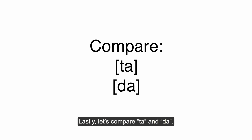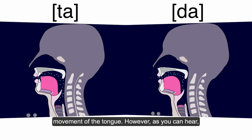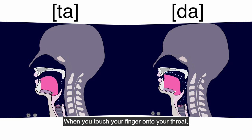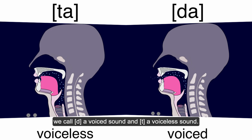Lastly, let's compare ta and da. Ta and da have exactly the same position and movement of the tongue. However, as you can hear, they sound different. This difference is called voicing. When you touch your finger onto your throat, you can feel the vibration for da but not for ta. We call d a voiced sound and t a voiceless sound.